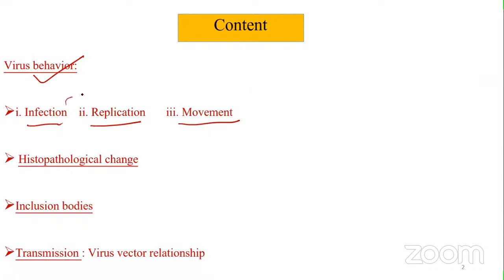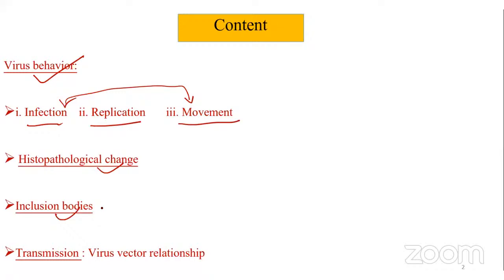These are all simultaneous processes, but we will try to decipher each one by one. We'll cover histopathological changes - cell or tissue modification when a virus enters - then inclusion bodies, what they are and their characteristic structures, and finally transmission with respect to virus-vector relationships. I'll try to cover all this within two hours.